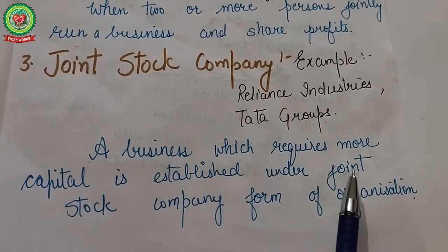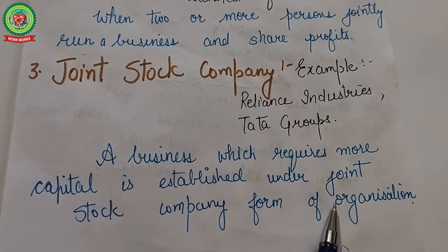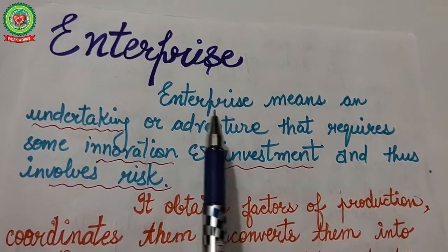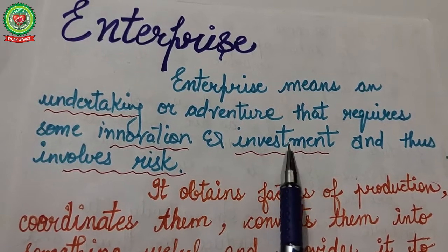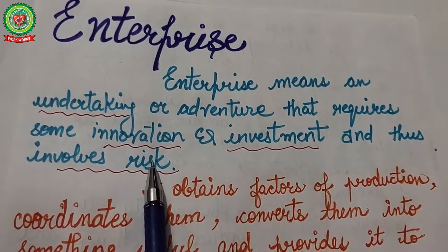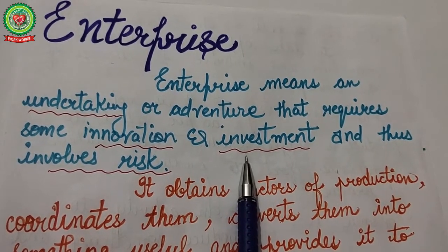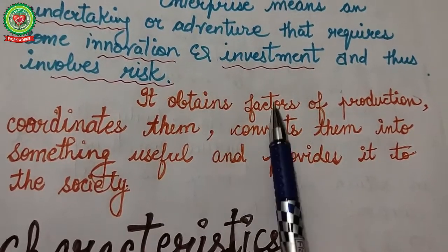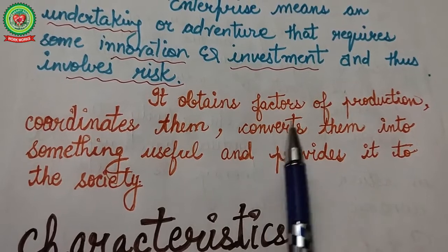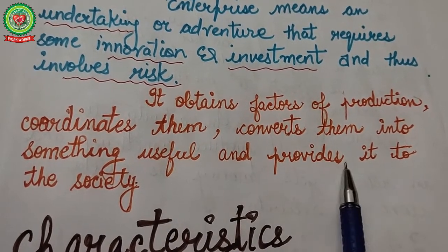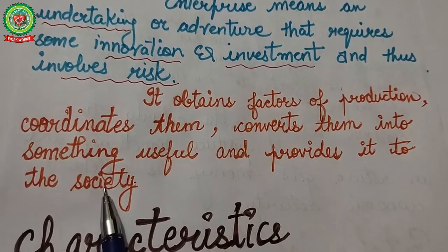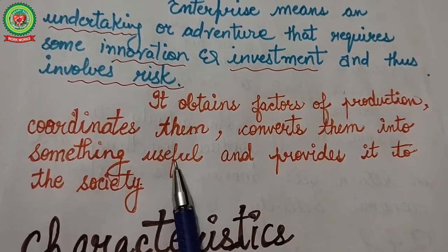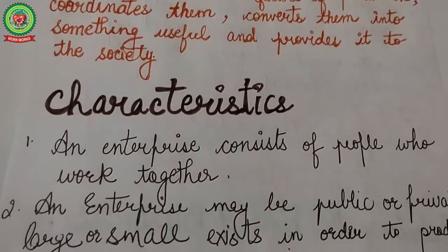Our first topic is enterprise. Enterprise means an undertaking or adventure that requires some innovation and investment, and thus involves risk. Just as a family is the basic unit of society, an enterprise is the basic unit of an economy. It obtains factors of production, coordinates them, converts them into something useful, and provides it to society. Decision-making, coordination, and risk-bearing are the main functions of an enterprise.